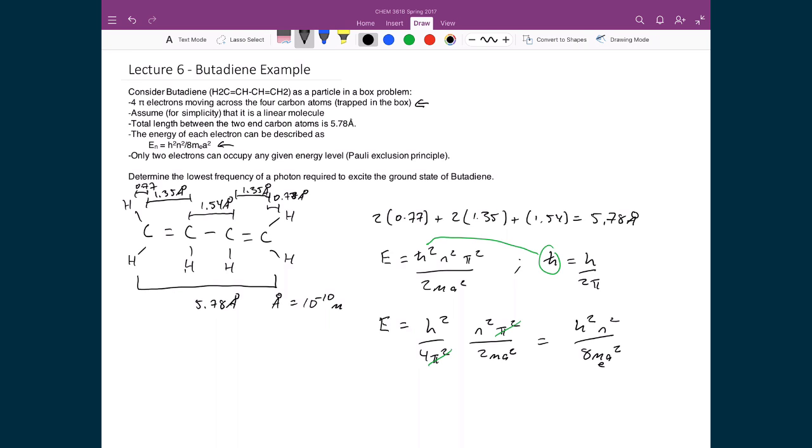So the final point in this example, or in this problem setup, is this one, that we can only put two electrons in each energy level. And this is something that we know as the Pauli exclusion principle, which we'll talk about a little bit later. But that just means that we can create an energy diagram that looks something like this.